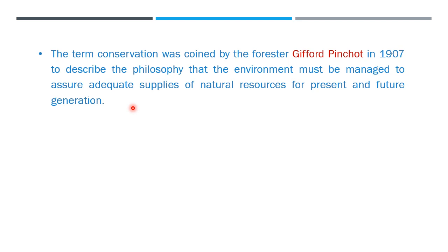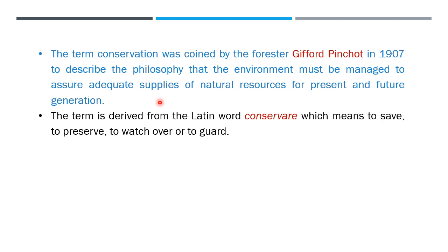It has its origin very far back in 1907 when Gifford Pinchot described the philosophy that the environment must be managed to ensure adequate supplies. The term is derived from the Latin word 'conservare' which means to save, to preserve, to watch over, or to guard — which is all what we do when we talk about wildlife conservation. We try to save the animals, preserve them for future generations, watch over them, and guard them against poaching.